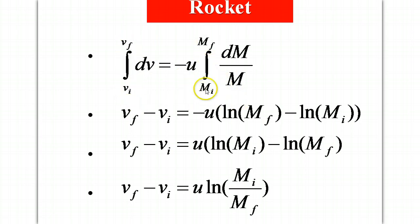And this involves a natural logarithm function and looks something like this. Now vf minus vi, that's a change in the speed of the rocket, is equal to u the relative speed of the exhaust times the natural log of the ratio of the masses.